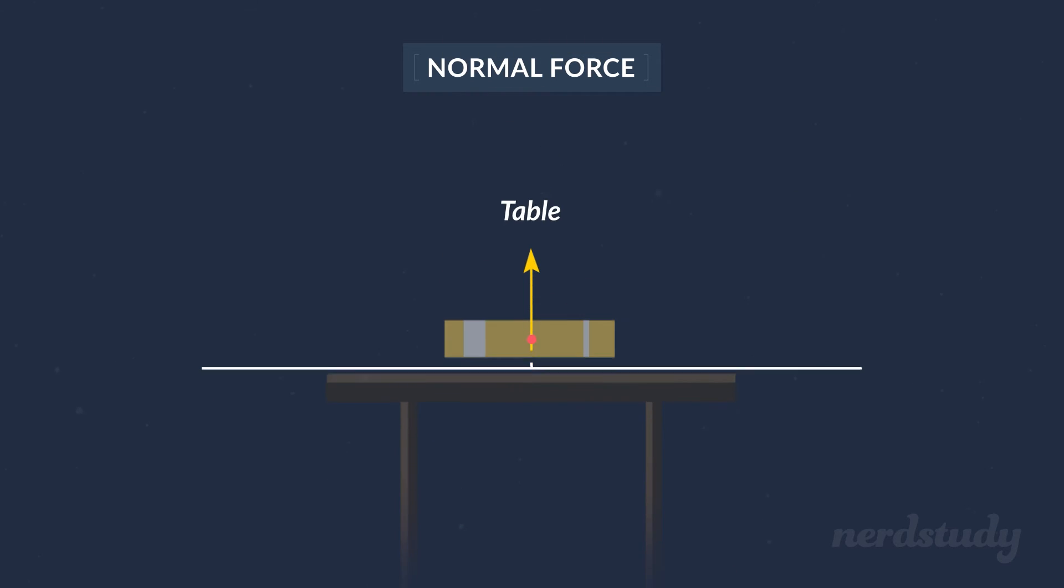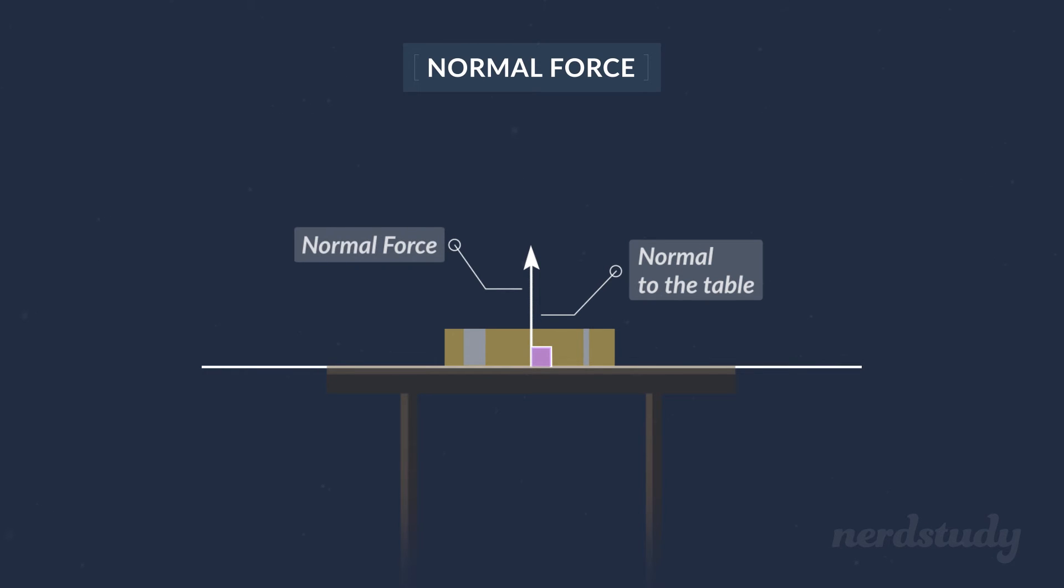Well, let's have a closer look at this diagram again. The normal force points directly upward, in other words, exactly at right angles to the surface of the table. In ordinary language, we'd say that the force is perpendicular to the table or at right angles to the table. A mathematician would say that too, but they might also say that the force vector is normal to the surface of the table. That's why we call this force the normal force.